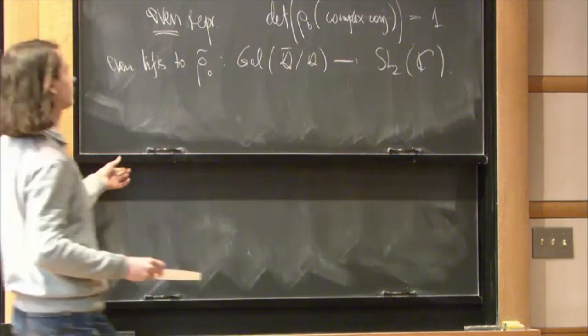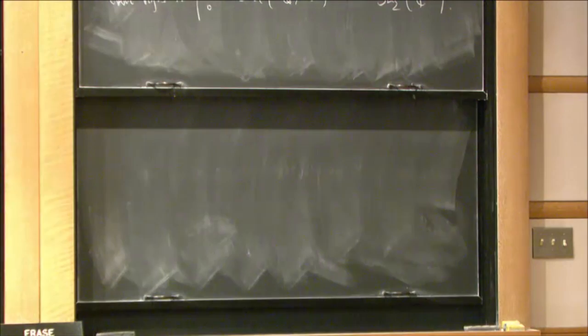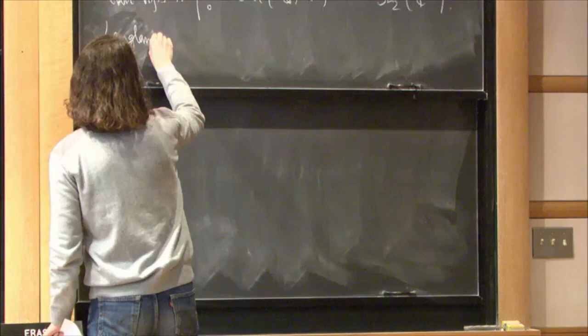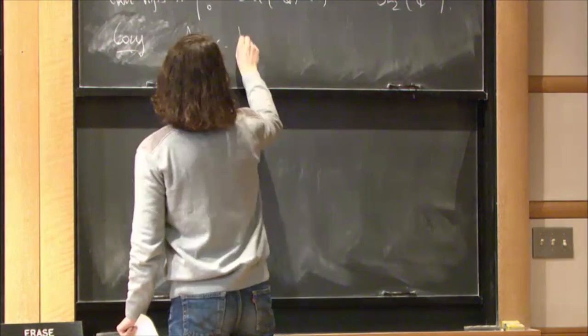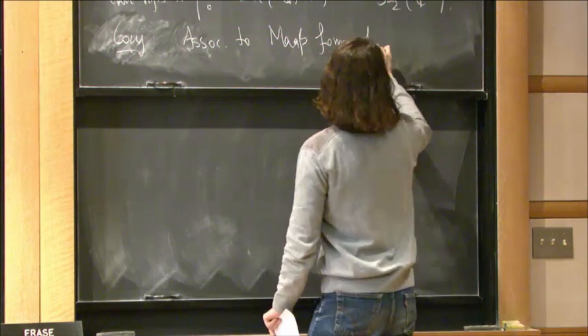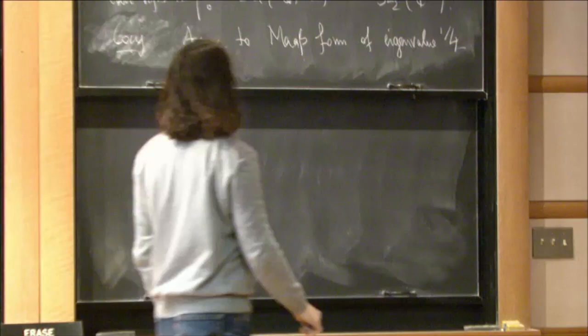And so, in this case, and if you want, you can even lift this to a complex valued representation. Because there's a lift from GL2 F3 into GL2 C as groups. And so, this should conjecturally, well, actually, in this case, it's a theorem of, because the group is solvable, it's a theorem of Langlands-Tunnell.